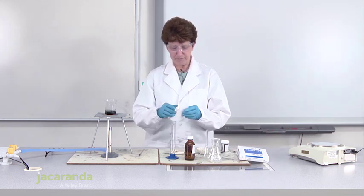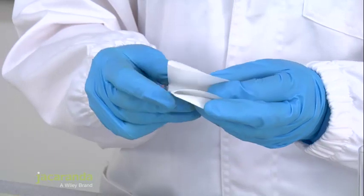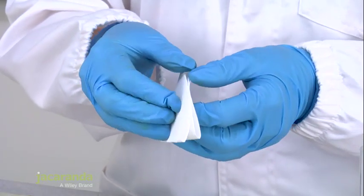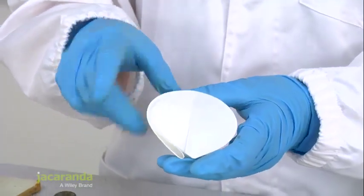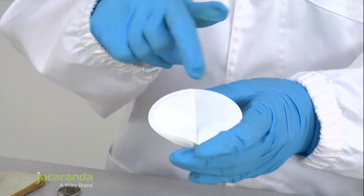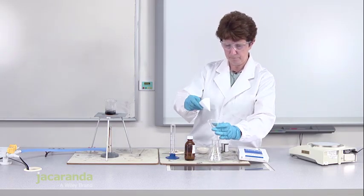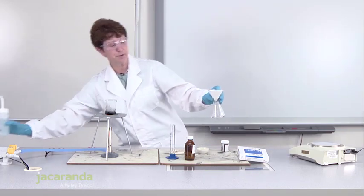So we need to filter out our solution using a filter paper and to do that we need to fold it in four bits, making sure that when we open it out, we have three sections on one side and just one section on the other. We can add a little bit of water to hold the filter paper down.